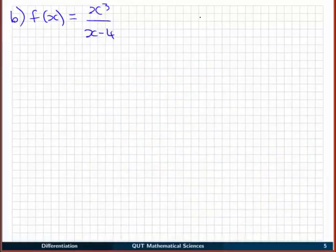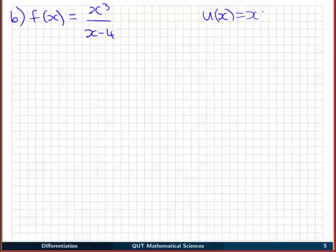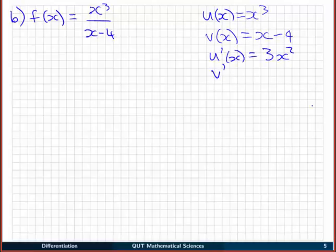Okay, so again we need to pick what u and v are, so we need u(x) is going to be the top, with the quotient rule u(x) is always the top, and v(x) is always the bottom of the fraction, x - 4. So u'(x) is quite simply 3x², and v'(x) is equal to just 1.